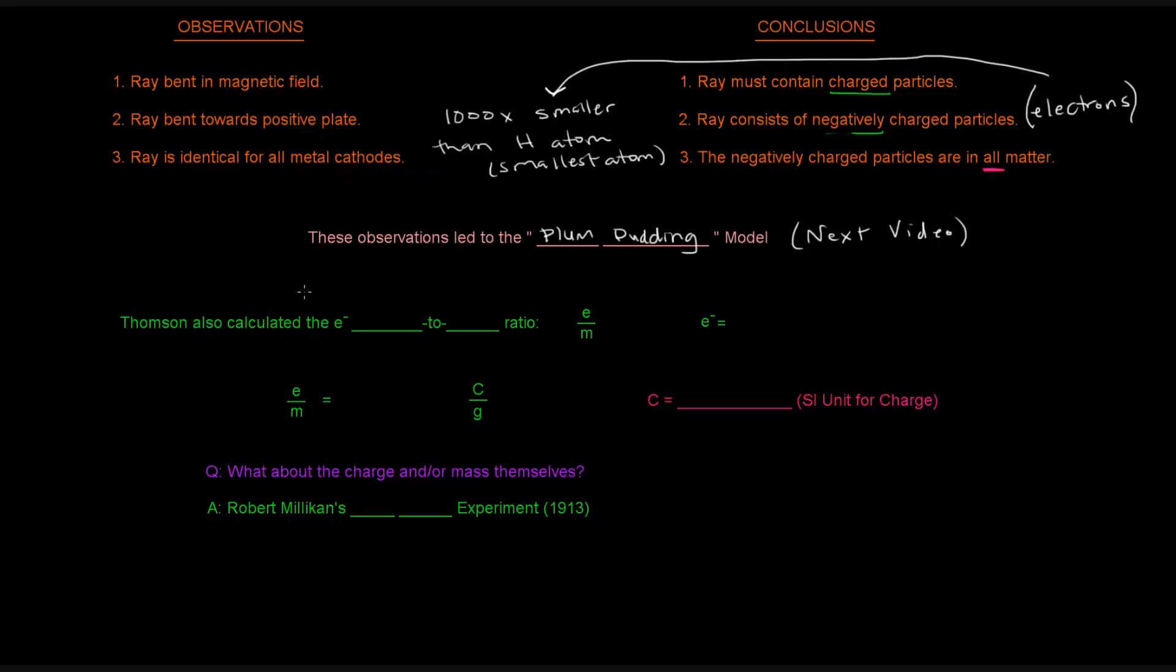Thompson also did, what he also did, was he calculated the electron's charge-to-mass ratio. So this little E with a superscript, that's a minus sign, that represents the electron, because electron, of course, starts with the letter E, and the minus sign indicates a negative charge.